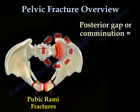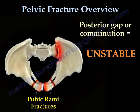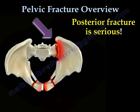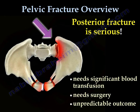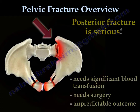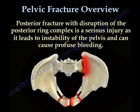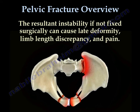An unstable pelvis will have a gap or comminution. The posterior fracture is serious — it will need significant blood transfusion, will need surgery, and the outcome will be unpredictable. That posterior fracture leads to instability of the pelvis and a lot of bleeding. This bony instability, if not corrected surgically, can cause leg deformity, limb length discrepancy, and pain.